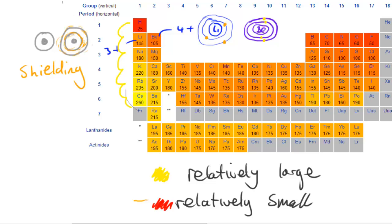Whereas if you go along this doesn't happen because they're all being added to the same shell. So because of that, as you go down the period, the size of the atomic radius increases.